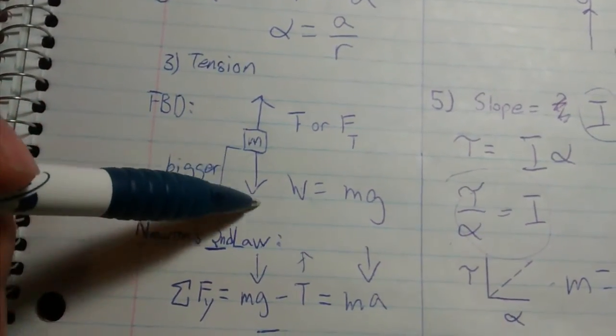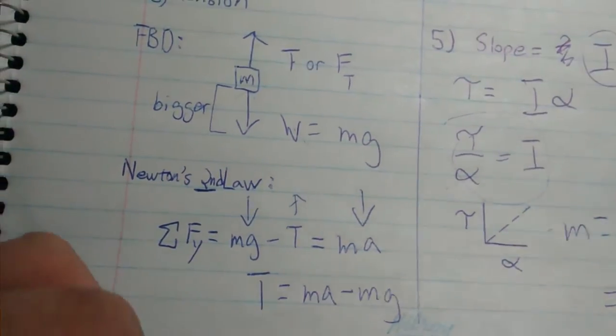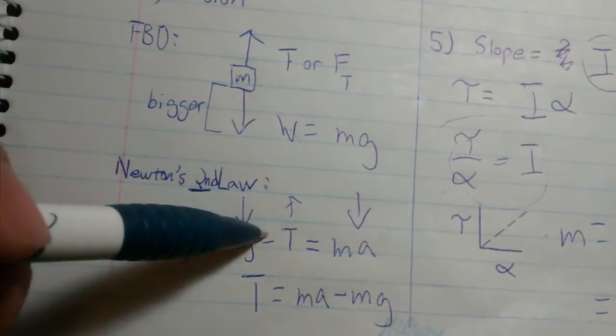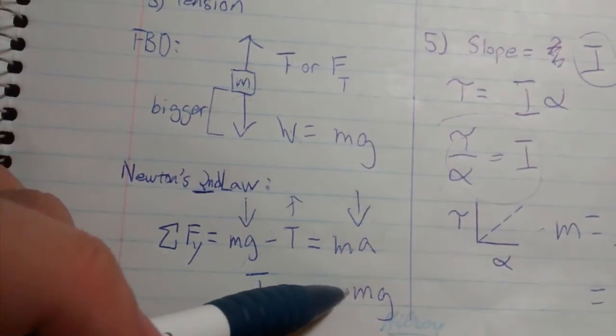We have mg (the weight) minus tension, so rearranging, tension equals mg minus ma. g is 9.8, and acceleration depends on your results.